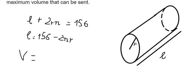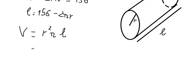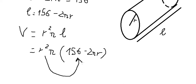So the volume of this one should be r² π multiplied by l. And we know that l is this one here, so we put this one to replace for l. Now this one multiplied by 156 and this one here.